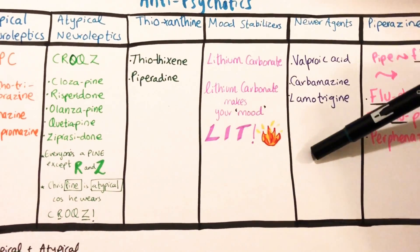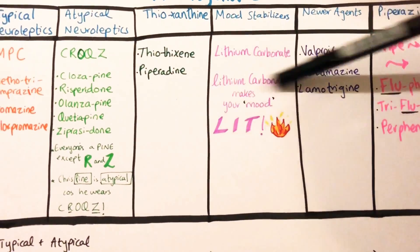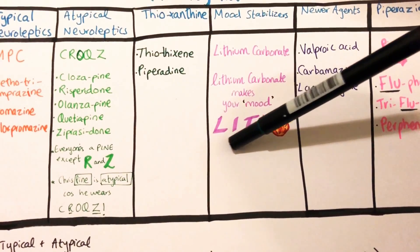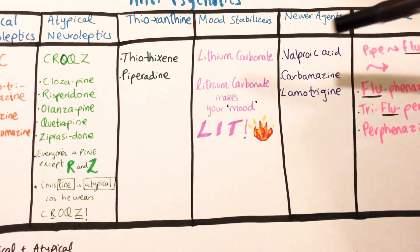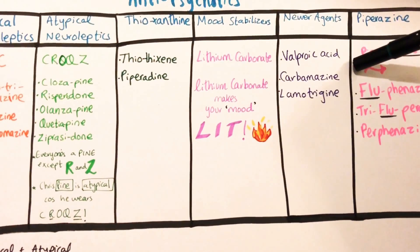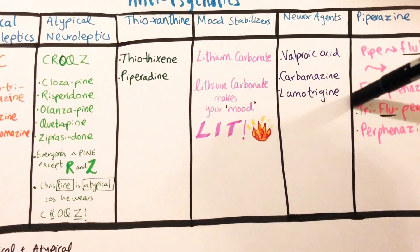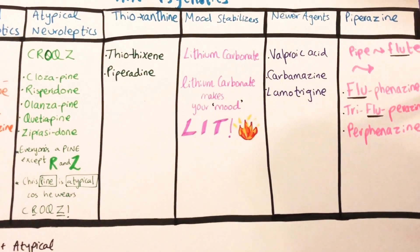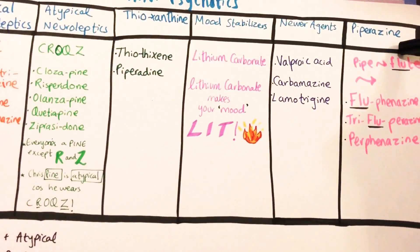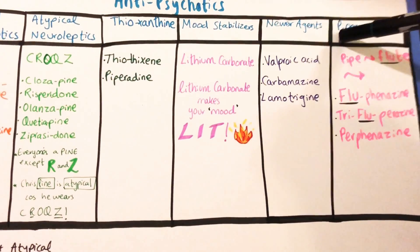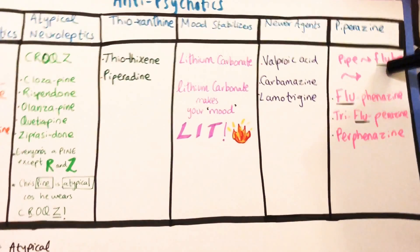Then we have newer agents like valproic acid, carbamazepine, and lamotrigine. Then there's piperazine — 'pipe' sounds like 'flute,' you know, pipe and flute, they're both instruments.